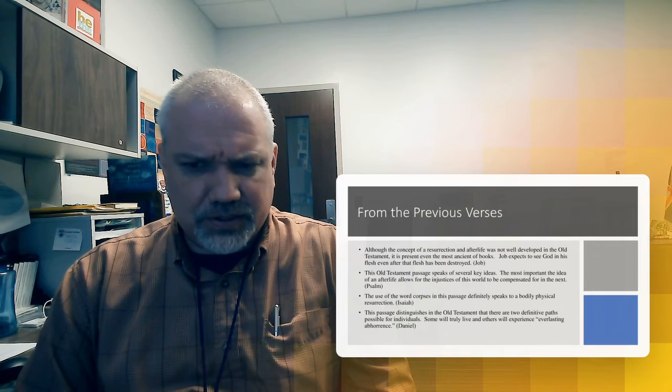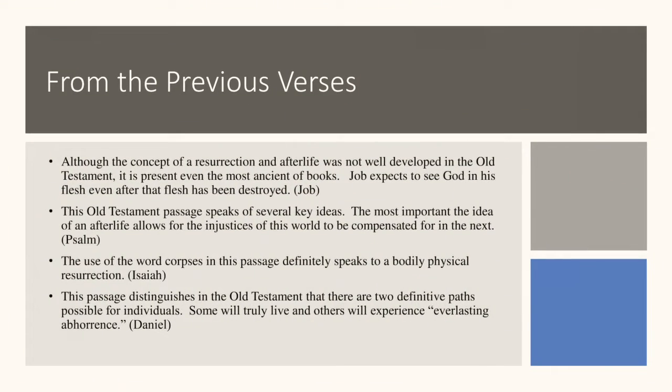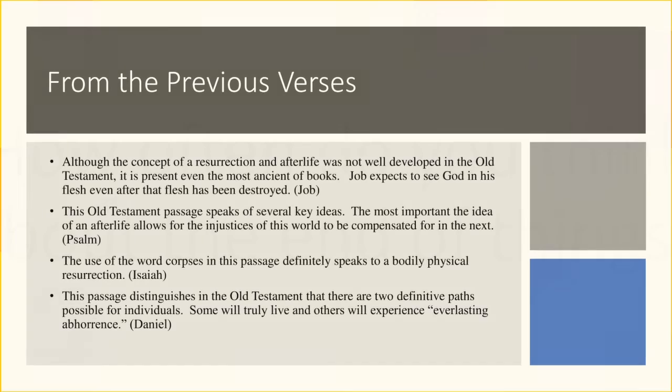From those verses, we can see that although the concept of the resurrection and afterlife was not well developed in the Old Testament, it is present even in the most ancient books. Job expects to see God in his flesh even after the flesh had been destroyed. The Old Testament passages speak of several key ideas. The most important, the idea of an afterlife allows for injustices of this world to be compensated for in the next. The use of the word corpses in the Isaiah passage definitely speaks to a bodily and physical resurrection. And the Daniel passage distinguishes in the Old Testament that there are two definitive possibilities for individuals. Some will truly live and others will experience everlasting abhorrence.